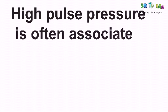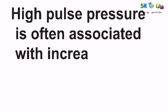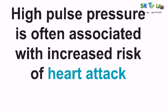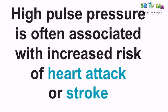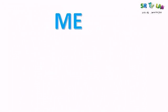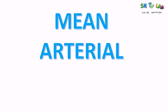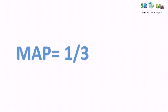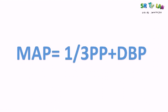High pulse pressure is often associated with an increased risk of heart attack, stroke, or cardiovascular accident. Now let's look at mean arterial pressure, or MAP. Here is the formula: mean arterial pressure equals one third of pulse pressure plus diastolic pressure.